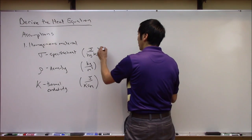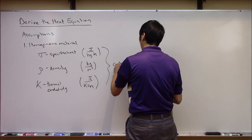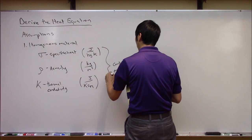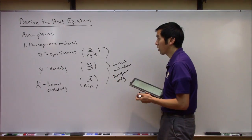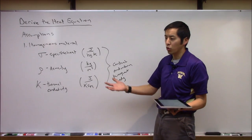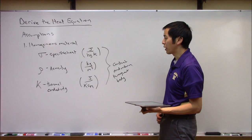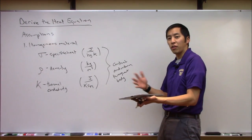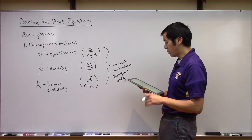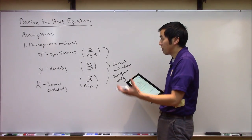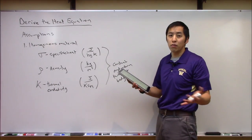Finally, let's assume that the thermal conductivity K, measured in units of joules per Kelvin second meter, is also constant. All of these properties are going to be constant and uniform throughout the body. This is a very good model for a homogeneous material — something like pure aluminum or steel — though things like wood, which are anisotropic, would probably not be modeled well using this approach.